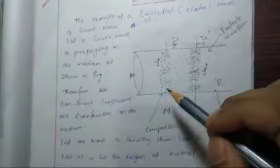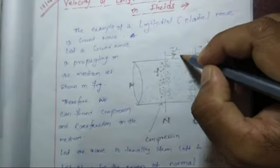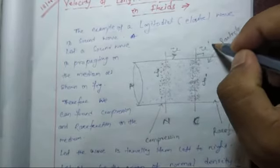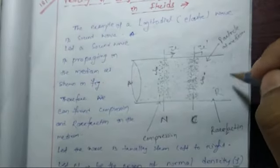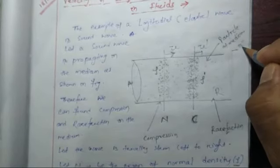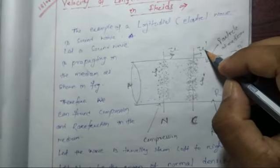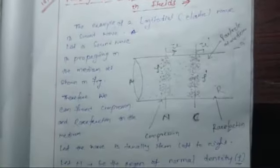This side is the N side and this side is the C side. As the wave moves from N to C, the velocity U at the starting point is higher, then U' is less than U, and further along U'' is less than U'. That means velocity is continuously decreasing as the wave moves towards the right.